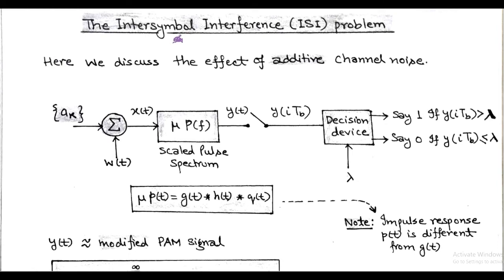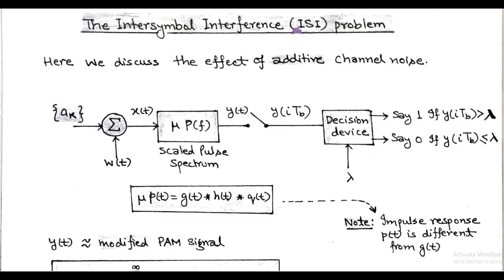After discussing the binary baseband transmission system, we move to the major problem in this technique, that is called inter-symbol interference or ISI. ISI is due to the dispersive nature of the low-pass channel, that is called the baseband channel. The frequency response of the low-pass channel deviates from the ideal low-pass filter, and introduces an interference called ISI.